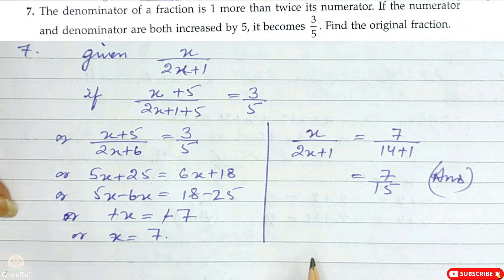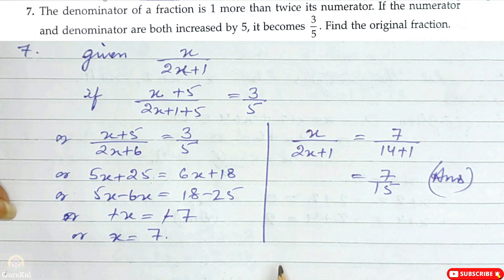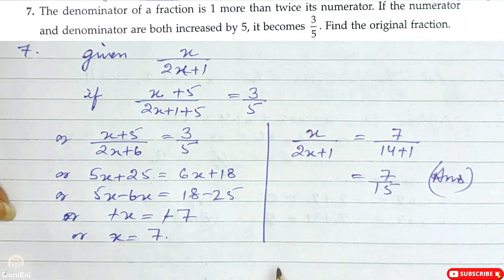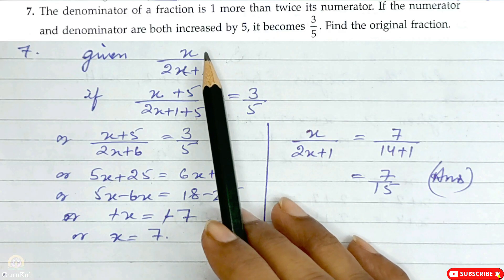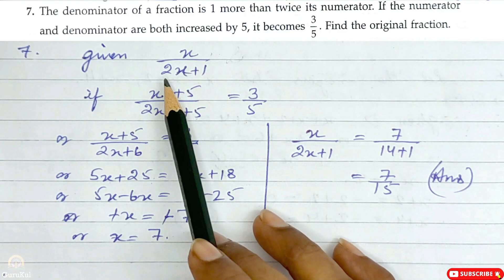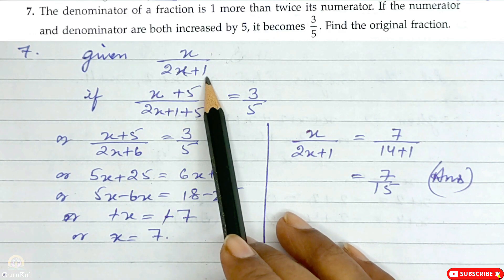Question number 7: The denominator of a fraction is 1 more than twice its numerator. If the numerator and denominator are both increased by 5, it becomes 3/5. Find the original fraction. Let the fraction be x over (2x plus 1).